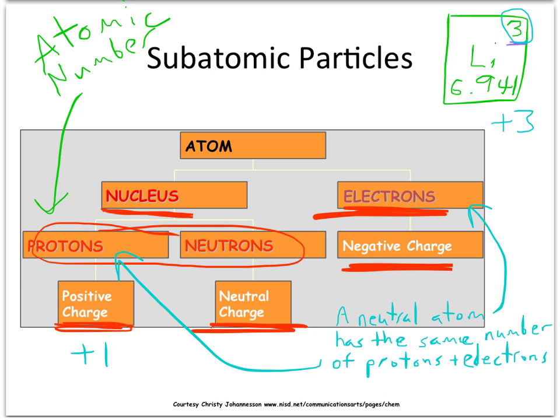If you had three electrons in the electron cloud around that lithium atom, each electron has a charge of negative one. And so, three electrons would give you a total charge of negative three. Well, if you add up plus three and minus three, your total charge is zero.